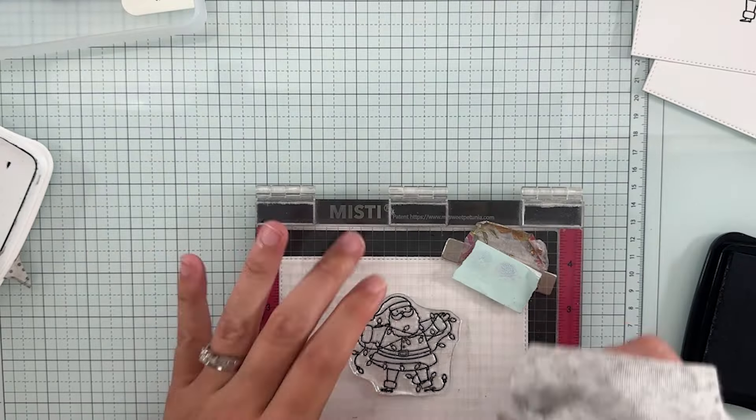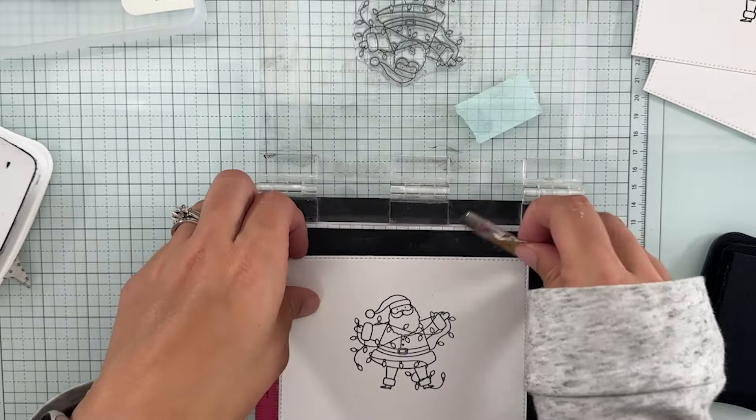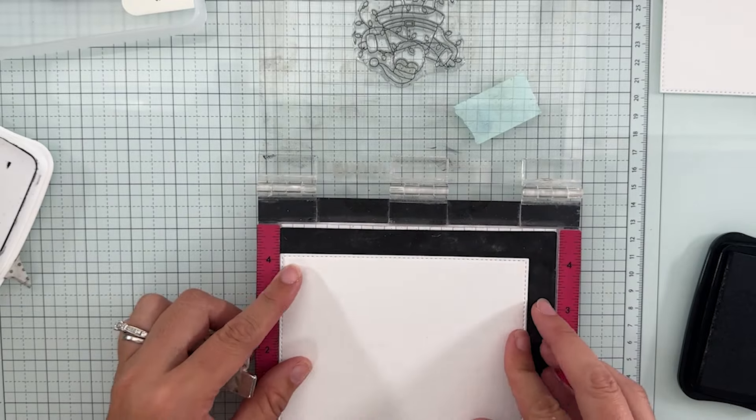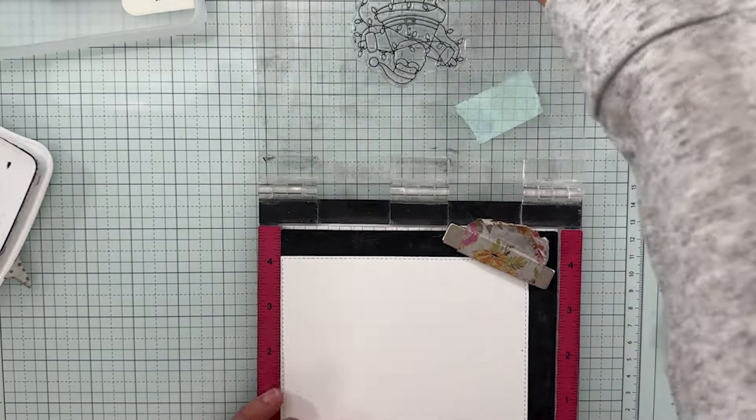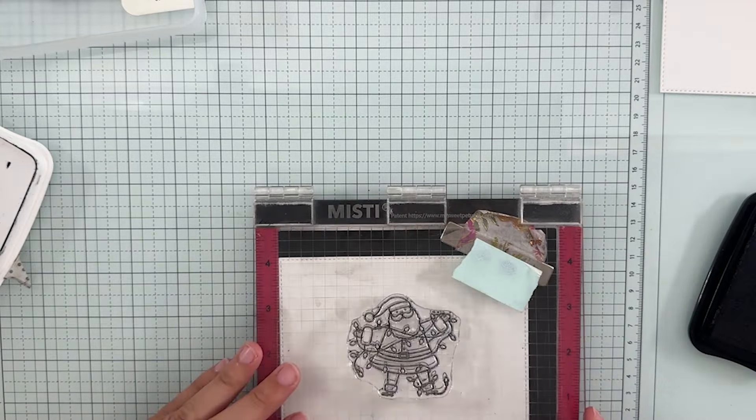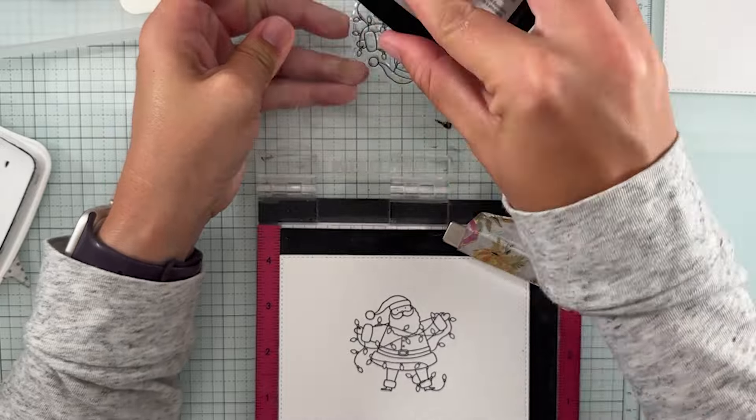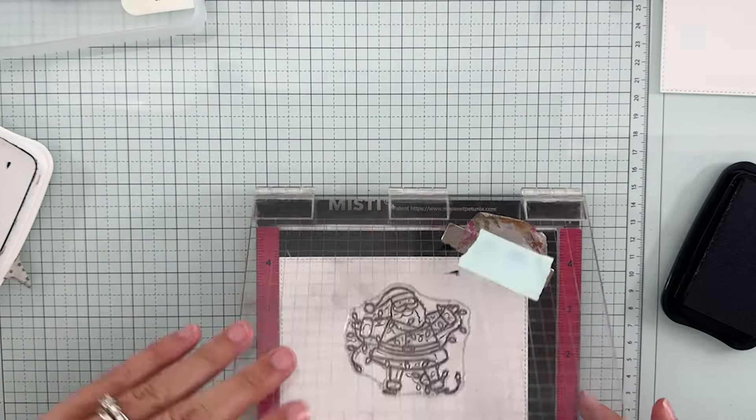So we are going through and just stamping our images. I ended up only using three of the Santas. There was a Santa drinking coffee or maybe hot cocoa. I could have used it but I thought a lot of it was going to get covered up by the Merry anyways. So we just went with the three and doubled up on one.